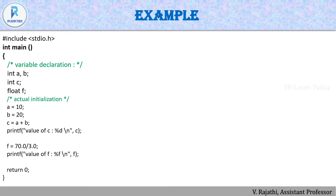Here is an example program. After the header file and main function, we declare variables: 'int a, b, c; float f;'. Then we assign: 'a = 10; b = 20; c = a + b;'. We then print the values of c and f. This example demonstrates both variable declaration and initialization.